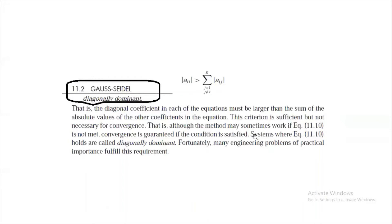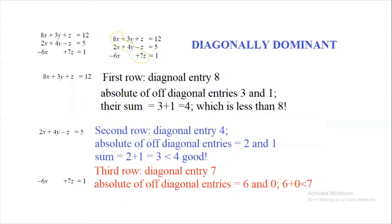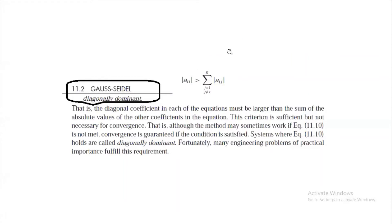Convergence is guaranteed if the diagonal dominance condition is satisfied. A system satisfying this condition is called diagonally dominant. If the given system is diagonally dominant, Gauss-Seidel will give convergent results. Fortunately, many engineering problems of practical importance fulfill this diagonal dominance requirement.